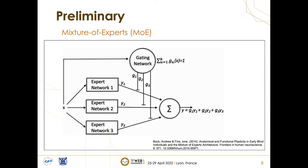Another line of work we were interested in was the mixture of experts, or MOE for short. Multiple expert networks are used to divide a problem space into homogeneous regions. This approach has been heavily used in computer vision and multimodal learning. As shown in the figure, we can see how the gating network, or the softmax layer, applies weighting on each expert network. The output becomes the weighted sum of all the experts.